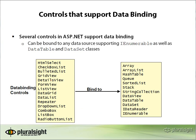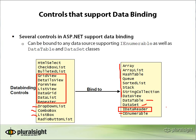Many controls are specific to data binding — designed just for it — like the GridView, DetailsView, DataList, and Repeater. Others are more general controls you might use outside of data binding too, like ListBox, ComboBox, and DropDownList. As for what you can bind to: you can bind to a DataReader implementing IDataReader, or the more generic IEnumerable — any collection in .NET that implements IEnumerable, which opens up a lot of doors. You can also bind to DataTables, DataSets, and DataViews.